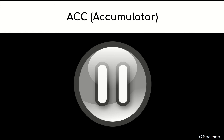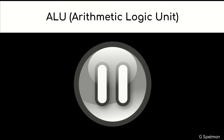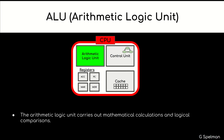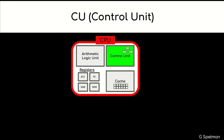Accumulator: the accumulator is a CPU register. It stores the results of the processing of the arithmetic logic unit. The arithmetic logic unit carries out mathematical calculations and logical comparisons. Control unit: the control unit manages the fetch-execute cycle. It manages the movement of data and signals around the computer.